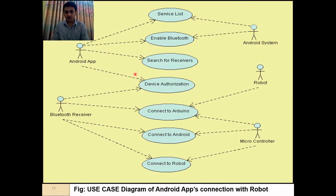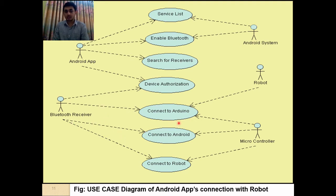This use case diagram shows the Android app's connection with the robot. After receiving the service list and enabling Bluetooth, the Android app searches for the Bluetooth receiver and connects with it. The Bluetooth receiver is connected with Arduino, through which the Android app can communicate with the microcontroller or robot.